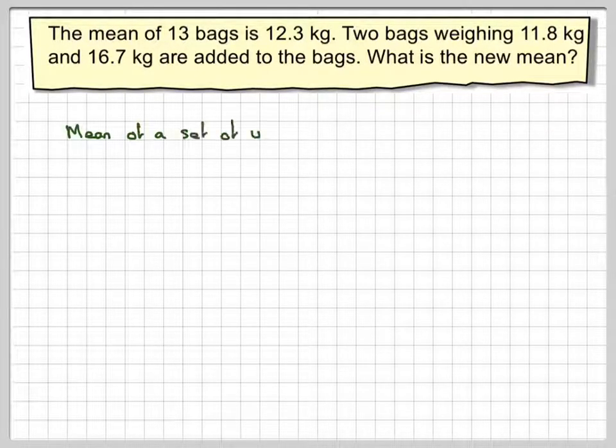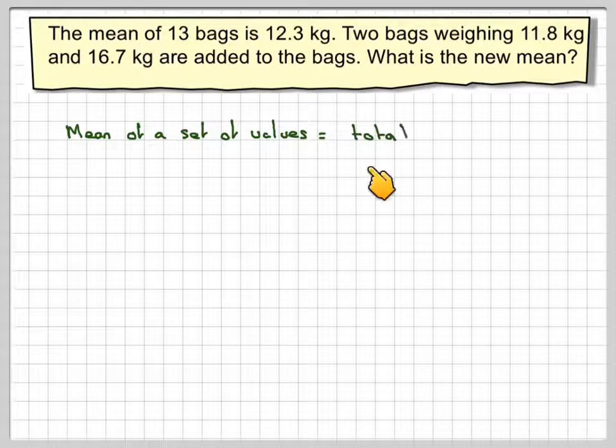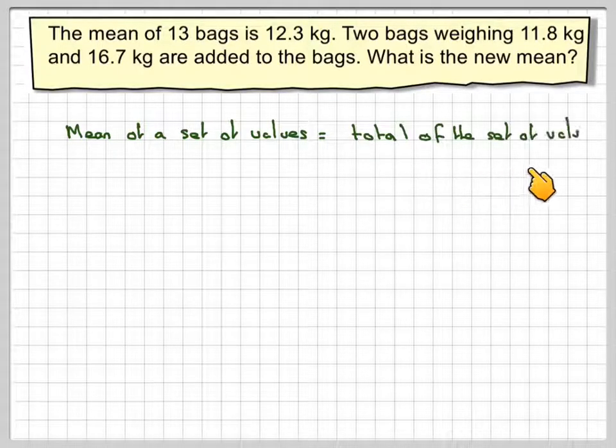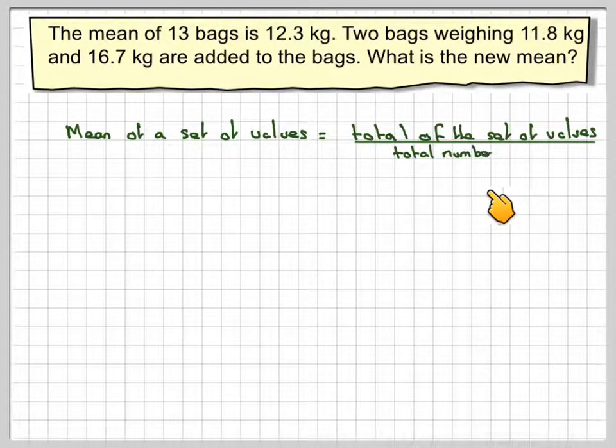What we've got to remember is the mean of a set of values is the total of the set of values divided by the total number of values.